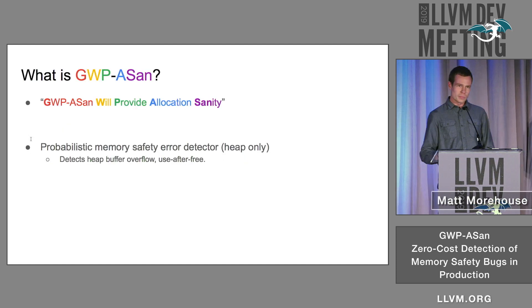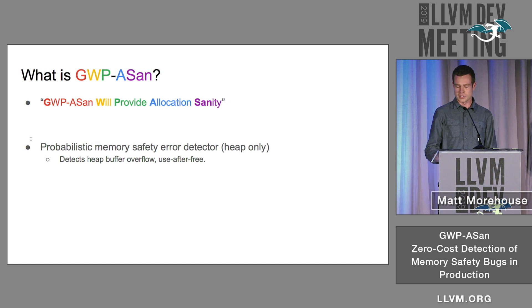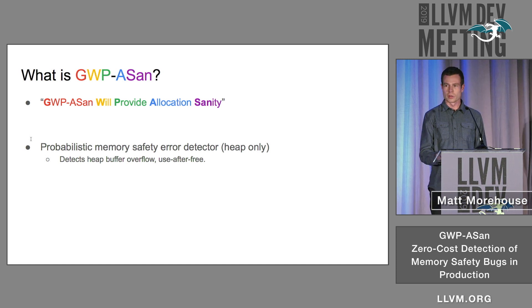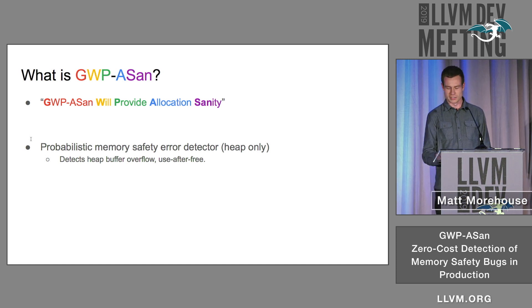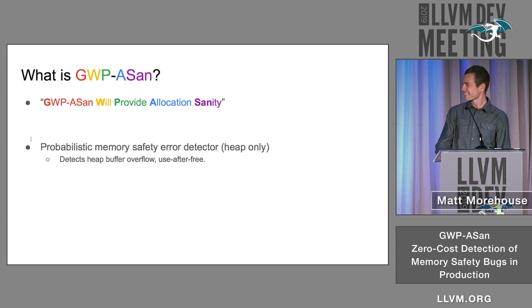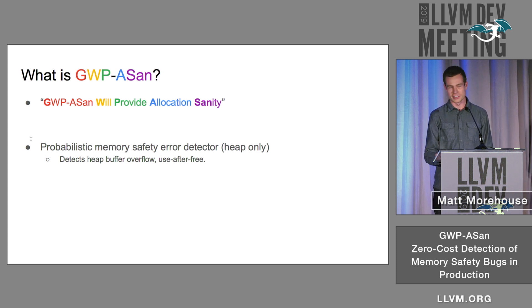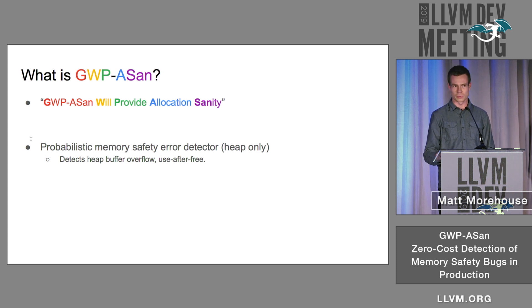GWP-ASAN is a recursive acronym. It stands for GWP-ASAN Will Provide Allocation Sanity. More concretely, it's a tool that finds heap buffer overflows and use-after-free.